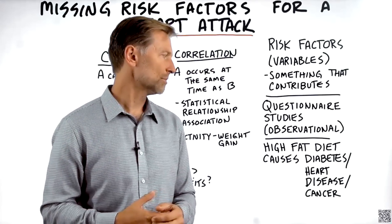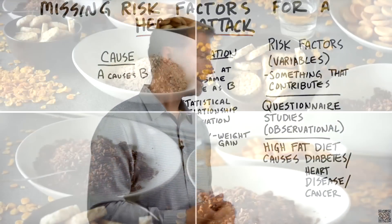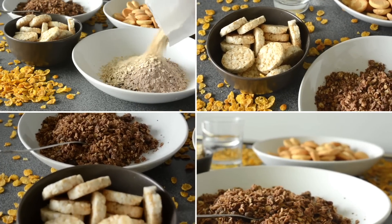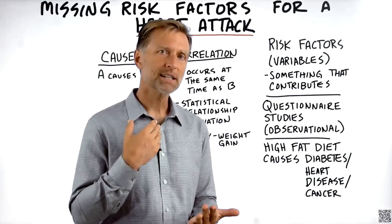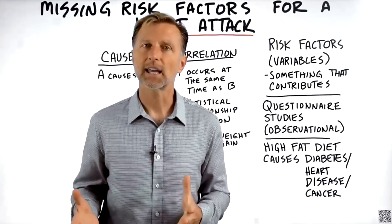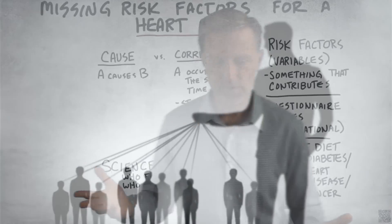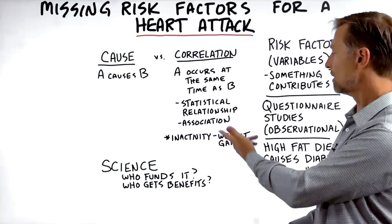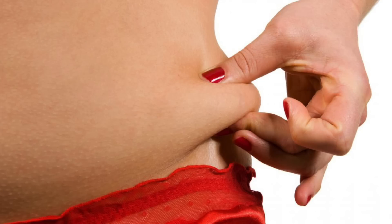And then you read the study and it absolutely positively has nothing to do with causation — there might be an association. But if you read further, you're going to find that the person wasn't just on a high fat diet; there were other variables, like they were also on a high carbohydrate diet at the same time. And because the ketogenic diet is a high fat diet, people assume the high fat diet was a ketogenic diet, when it's not. Here's an example of correlation: inactivity causes weight gain. It doesn't cause weight gain — it's associated, but it's not causation.